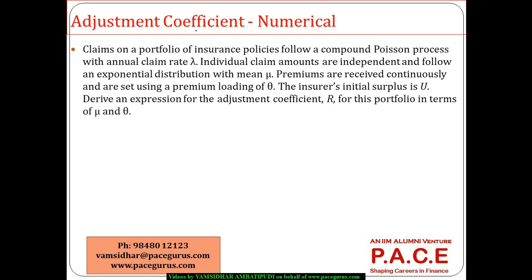Let's look at a numerical on the adjustment coefficient. Claims on a portfolio of insurance policies follow a compound Poisson process. For a compound Poisson process, we know that lambda times M_X(r) should be equal to lambda plus c*r. The portfolio follows an annual claim rate lambda.